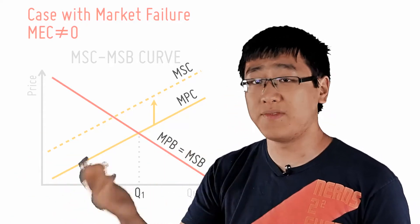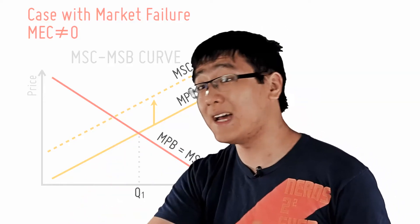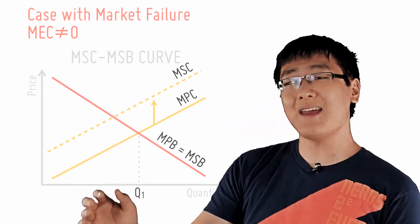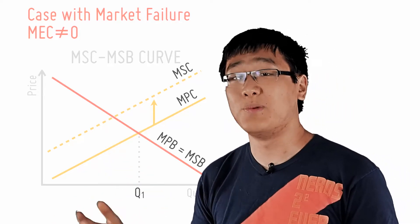Hence, the MSC now lies above the MPC. This means that the marginal social cost, or the cost to society of producing one additional unit of good, is higher than the marginal private cost, which is what the chemical company pays to produce one unit of chemicals.